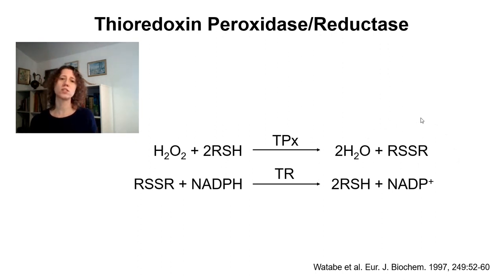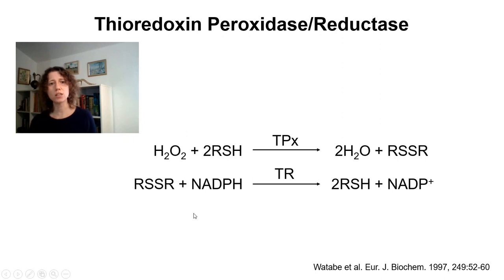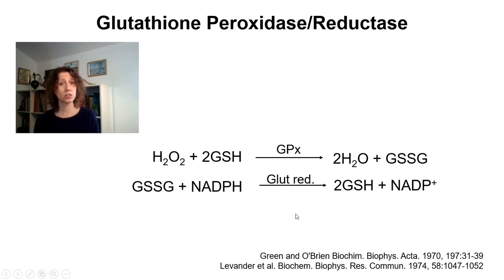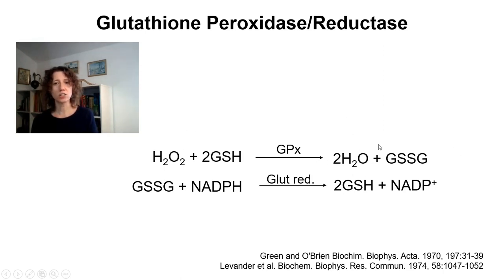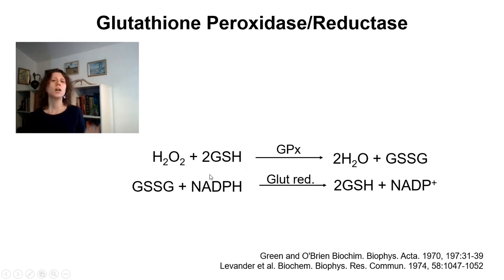To keep the thioredoxin system working, oxidized thioredoxin must be reduced again. Thioredoxin reductase does this using electrons from NADPH. This system is very similar to the glutathione peroxidase reductase system, also present in mitochondria. Glutathione peroxidase uses electrons from two glutathione molecules to reduce hydroperoxide, producing water and oxidized glutathione. Oxidized glutathione is then recovered by glutathione reductase using electrons from NADPH, producing NADP in the oxidized form.